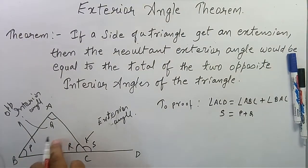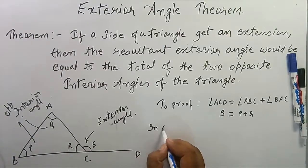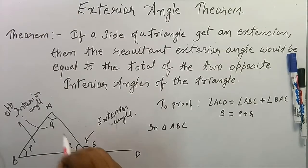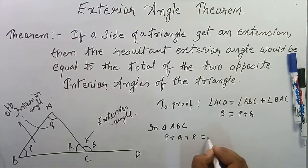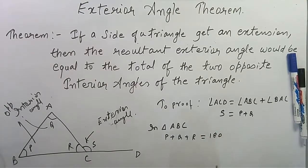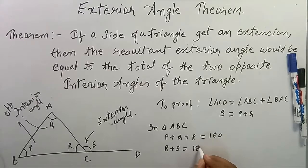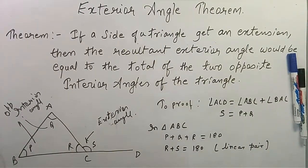In triangle ABC with angles P, Q, and R, the sum P + Q + R = 180 degrees. We can also see that R + S = 180 degrees, as they form a linear pair.